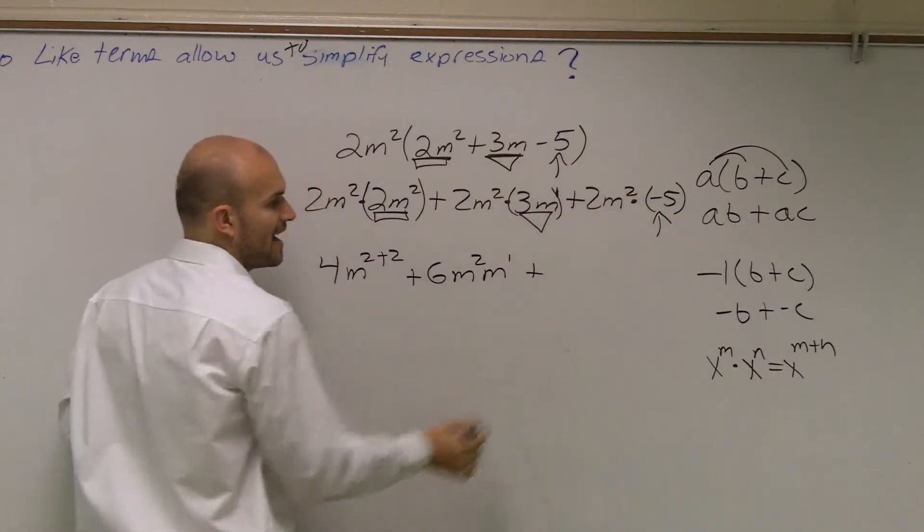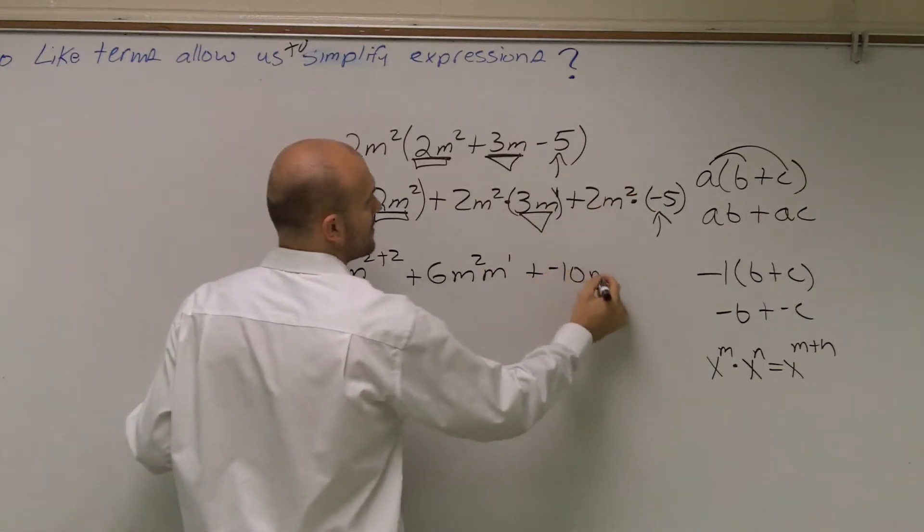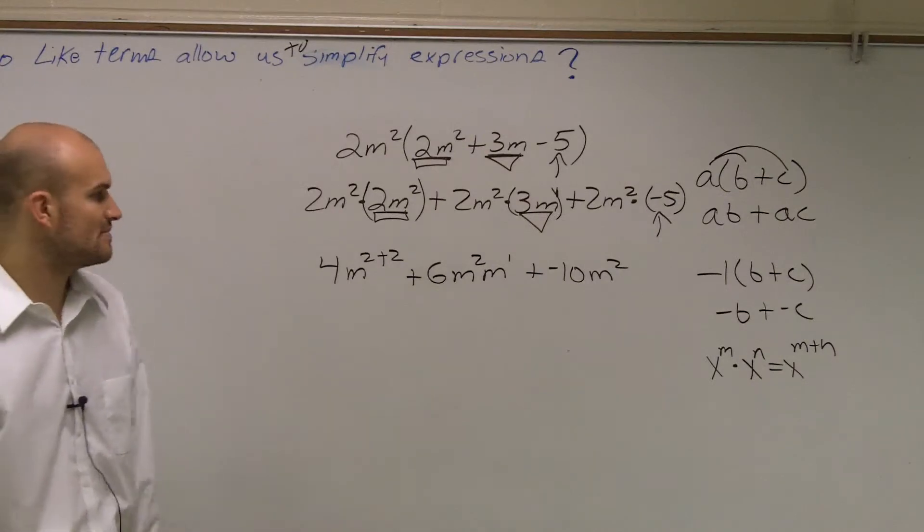Plus, now, 2 times negative 5 is going to be a negative 10. And I cannot add the m squared to anything, so it's just going to be m squared.